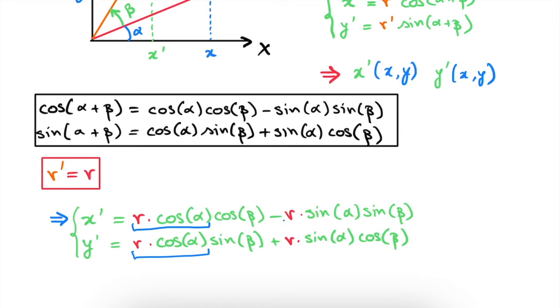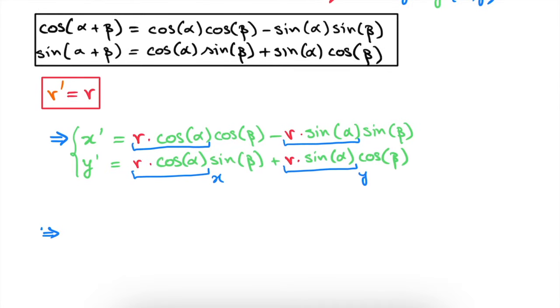So we can identify these pieces of our expression and rewrite them simply as x and y. So we get that x prime is equal to x times cosine of beta minus y times sine of beta, and y prime is equal to x times sine of beta plus y times cosine of beta.